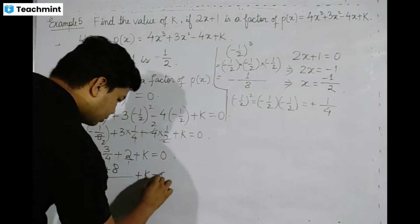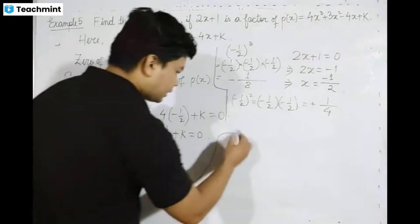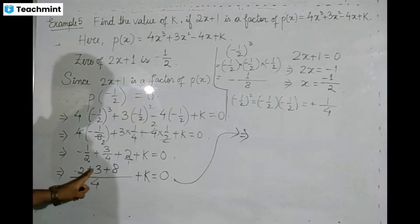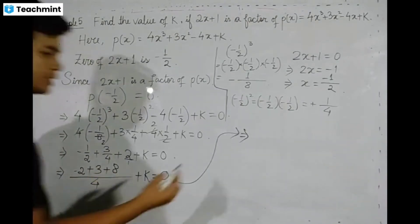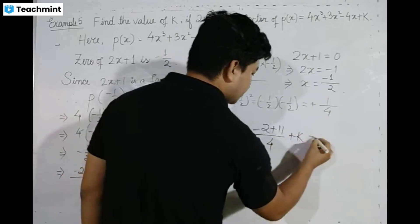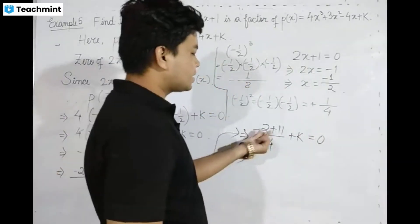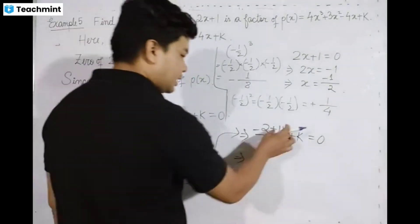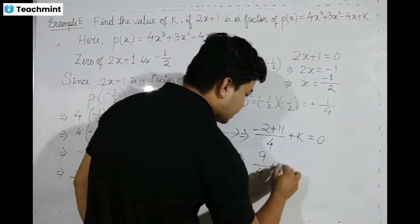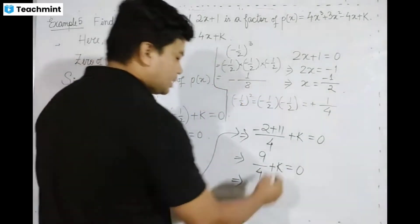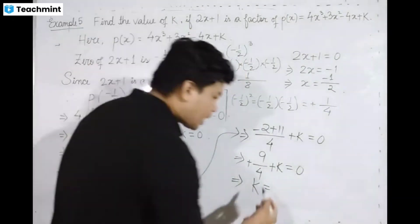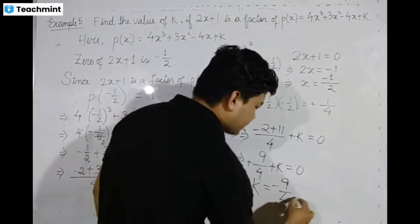So we have: minus 2 plus 11 divided by 4 plus k equals 0, which simplifies to k equals minus 1 plus 9 divided by 4, giving k equals minus 9 by 4.